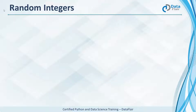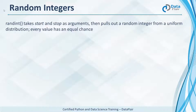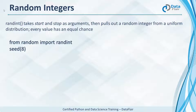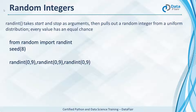We can also generate random integers. The randint function takes values for where the range begins and where it ends, then from this uniform distribution it pulls out a value — every value has an equal chance of being picked. Let's make the imports and set the seed to 8. We'll print 3 random integers in the range 0 to 9 inclusive, meaning it can also pick 0 or 9. This gives us 3, 5, and 6.